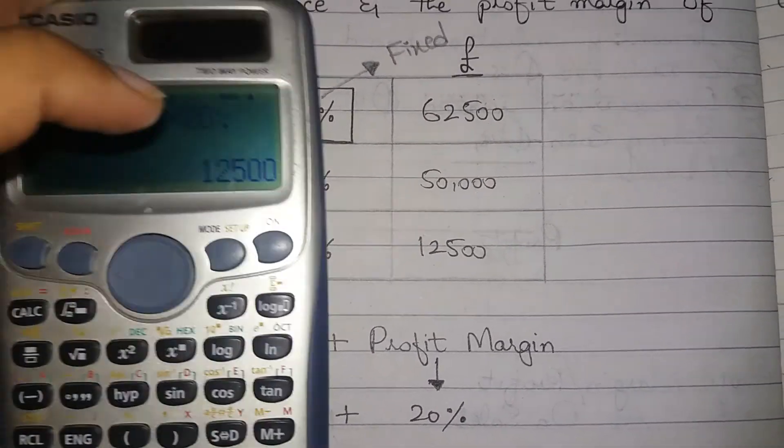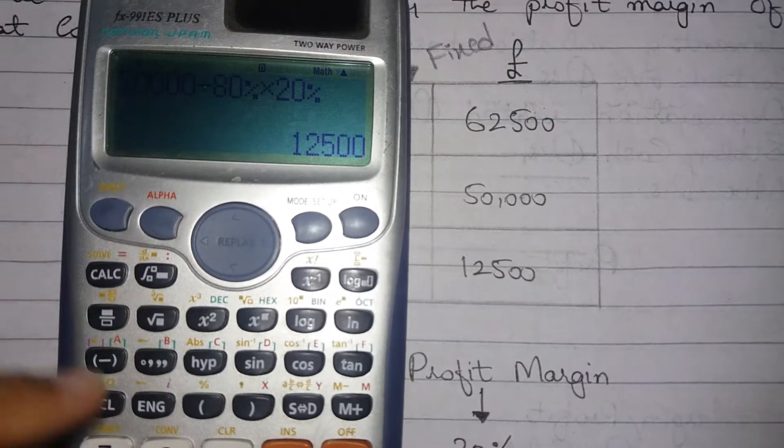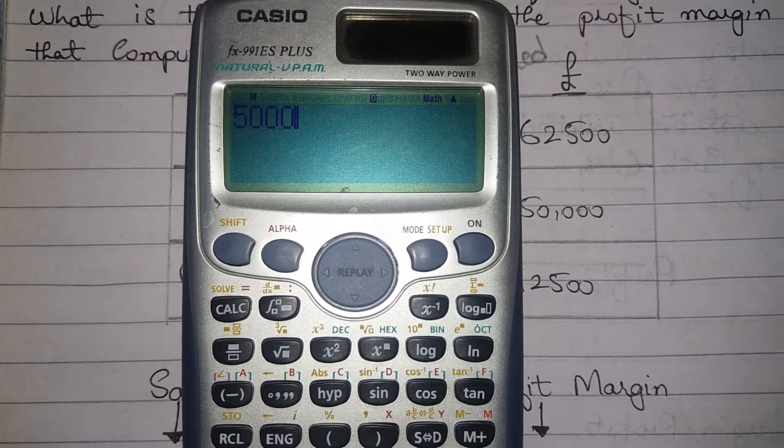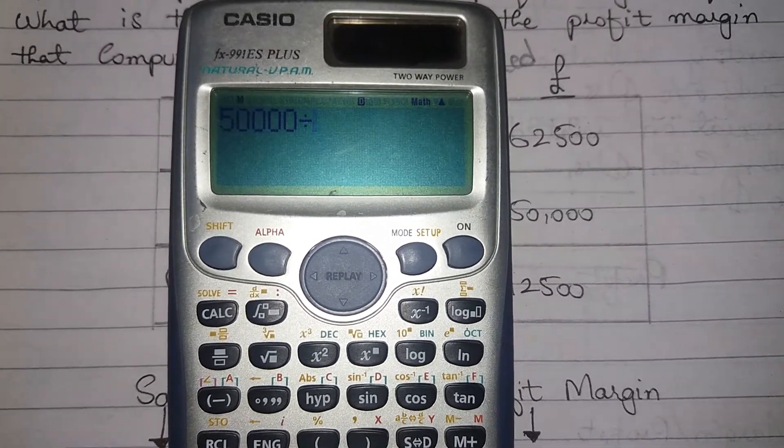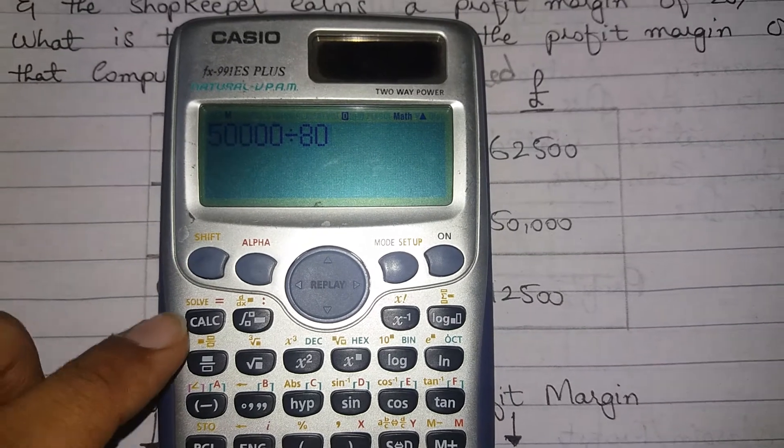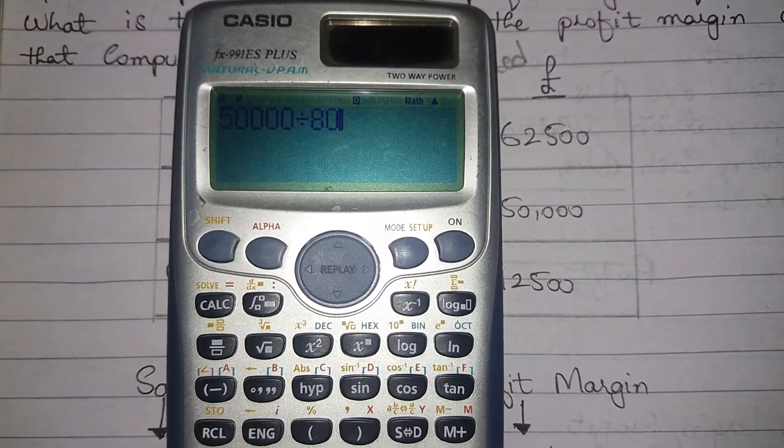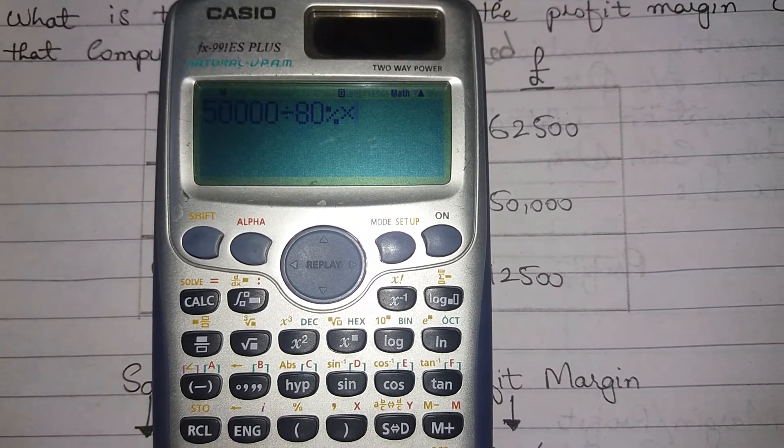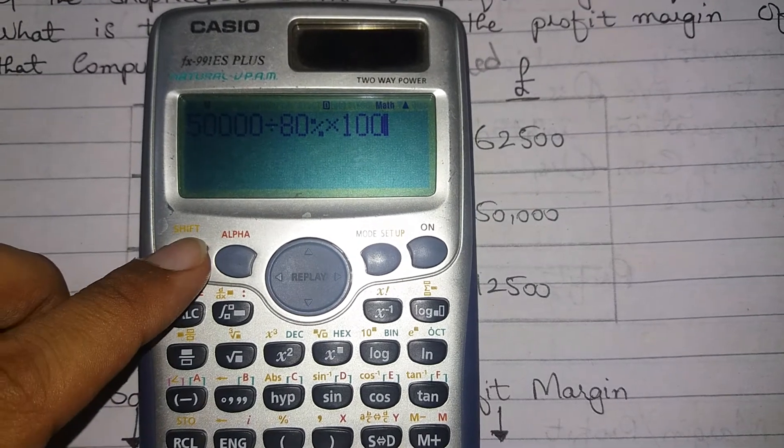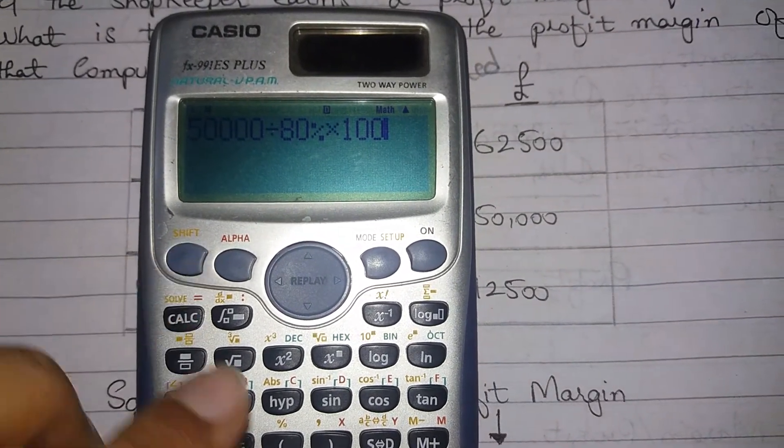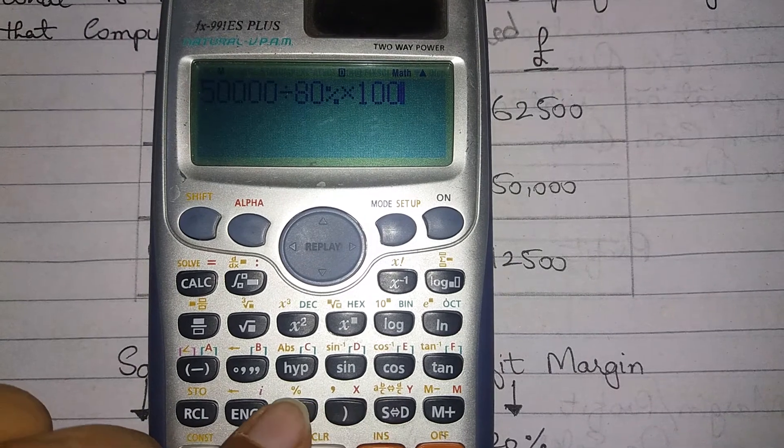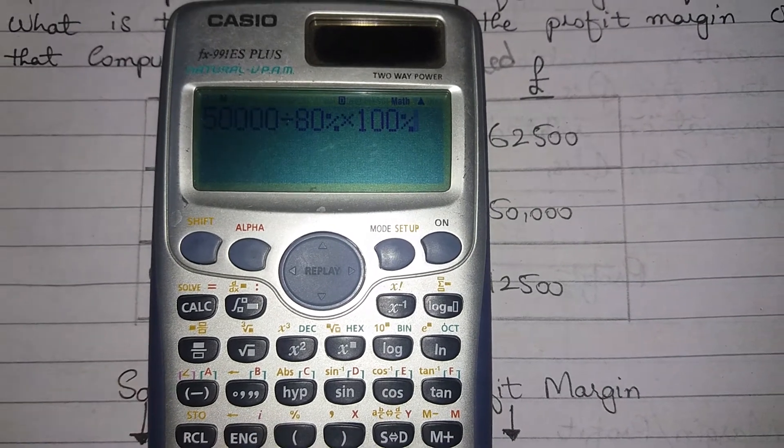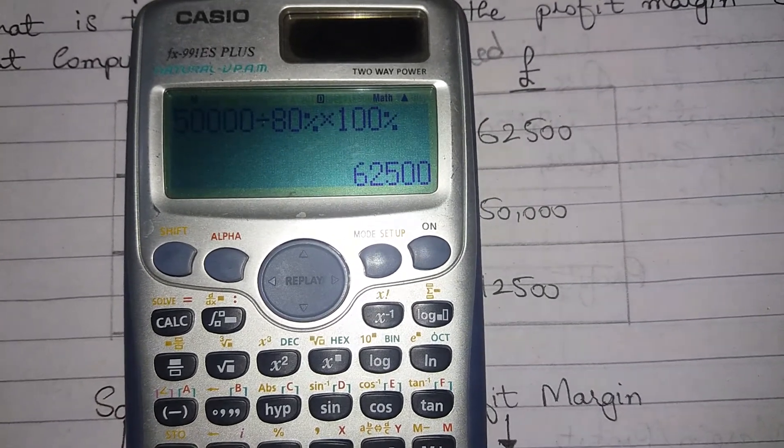And if you want to calculate selling price, then 50,000 divided by its percentage, that was the cost percentage, and then multiply by 100%. So you will reach your selling price, like I have calculated here.